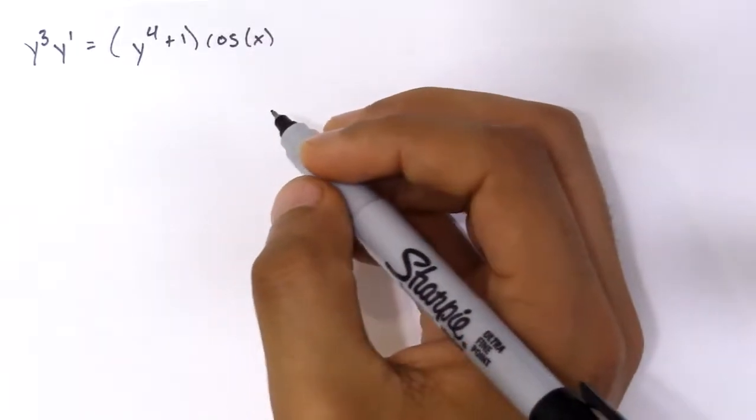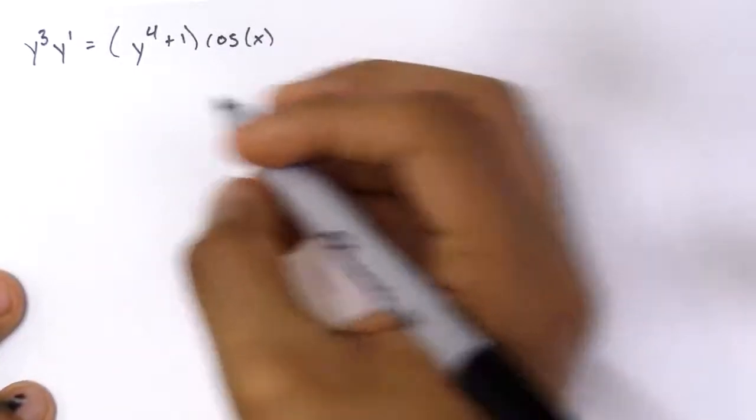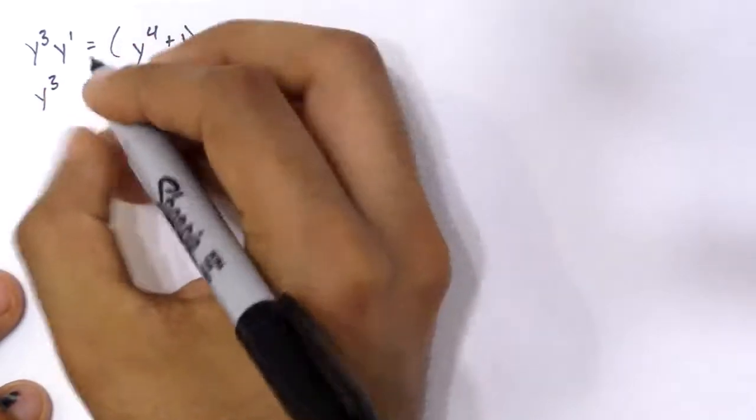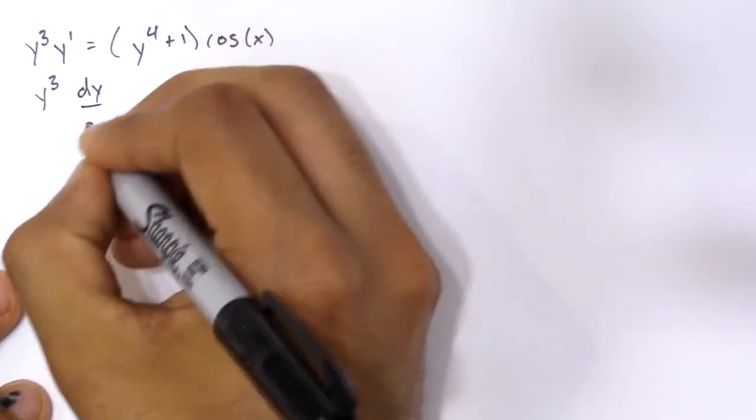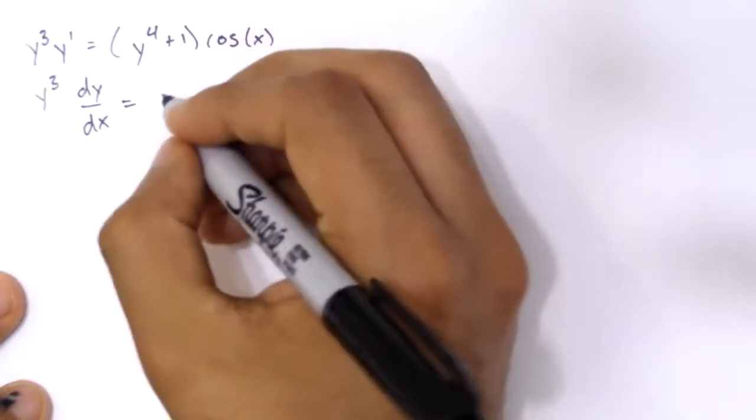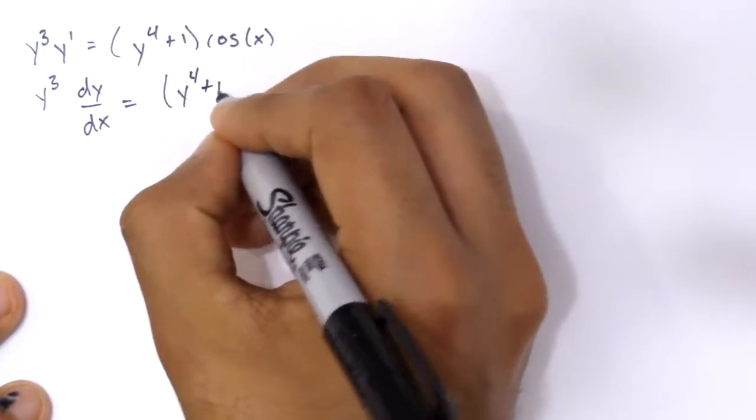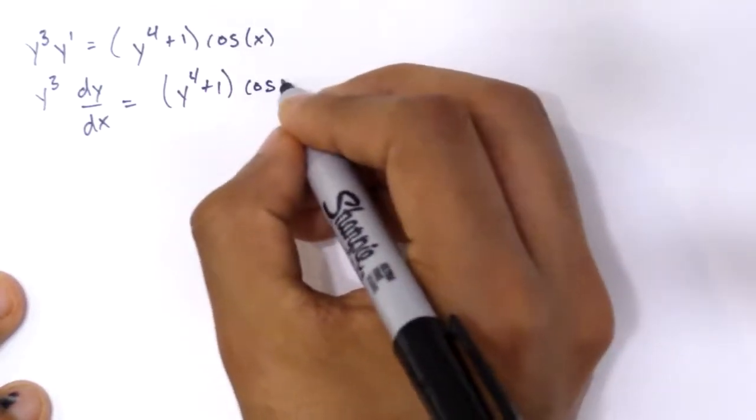This is another separable differential equation. So again, I'm going to rewrite this as y³ dy/dx which equals (y⁴+1) cos x.